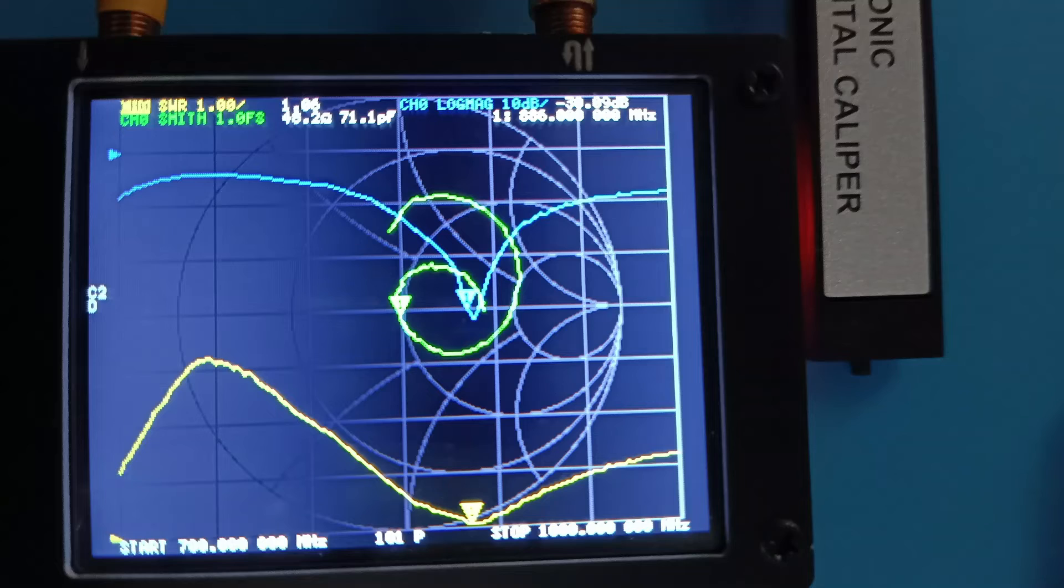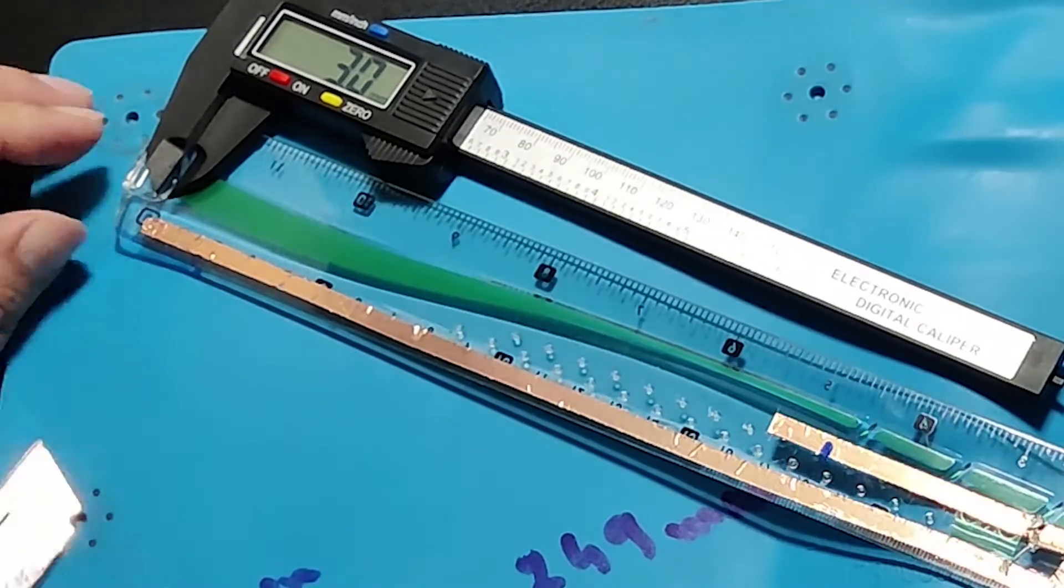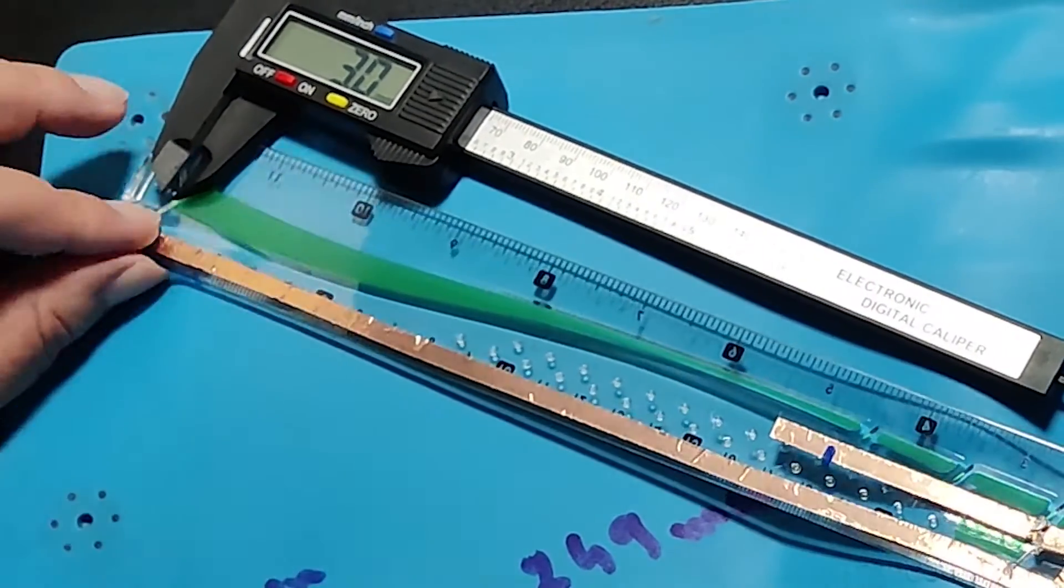So in the first observation, we see that the frequency is higher, at 886 MHz. So we cut 3 mm of the tape and check again.